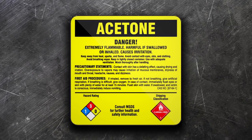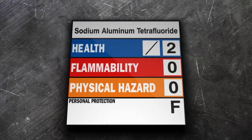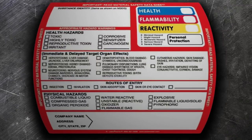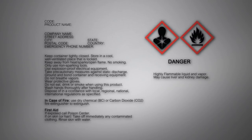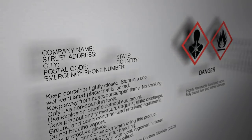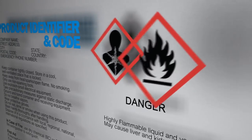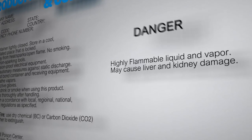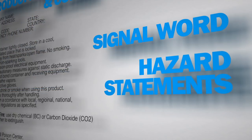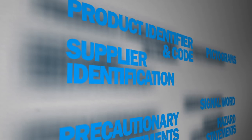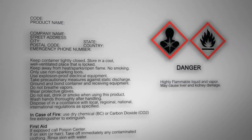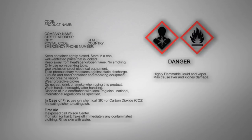This was compliant by RTK standards. So was this, and this. Now, this is what a HASCOM 2012 compliant label looks like. The design is comprised of six essential components: Product Identifier and Code, Pictograms, Signal Word, Hazard Statements, Precautionary Statements, and Supplier Identification. All of these elements must be present in order for a label to be compliant.